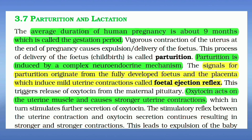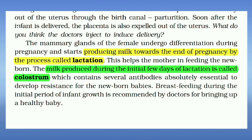Oxytocin acts on the uterine muscle and causes stronger uterine contractions. Mammary glands of the female undergo differentiation during pregnancy and start producing milk towards the end of pregnancy by the process called lactation. Milk produced during the initial few days of lactation is called colostrum.